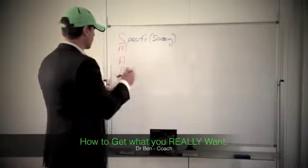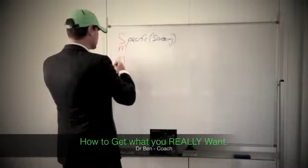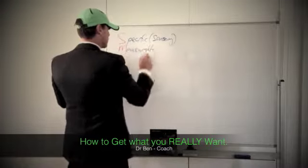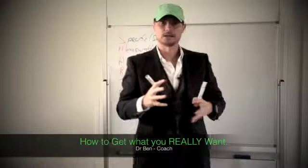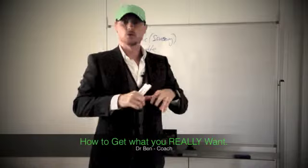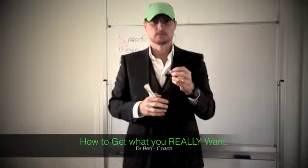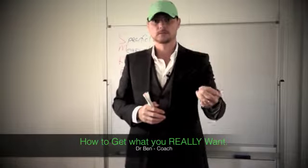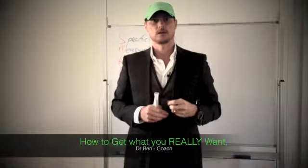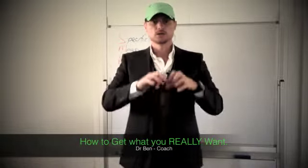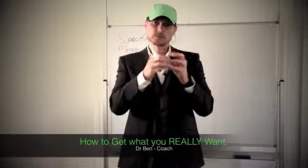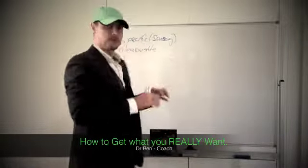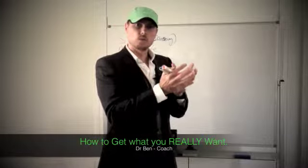Secondly, we'd make sure that the goal was measurable — that we could put some numbers around it. So, I'm going to get a learner-legal Ducati, a 600cc Ducati. I'm going to get it by the 1st of December 2013. We use terms that are measurable, so it's very specific. We know exactly what we want and we can measure what it is when we get it.